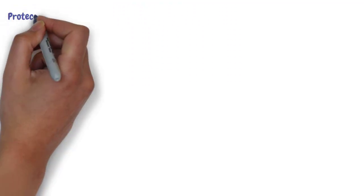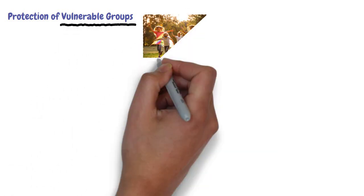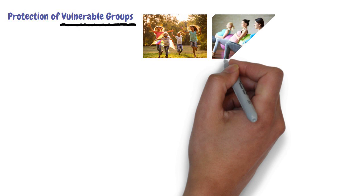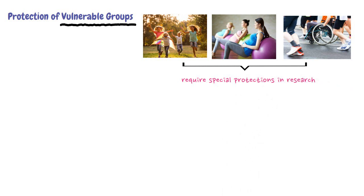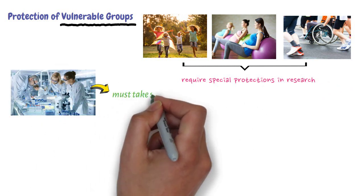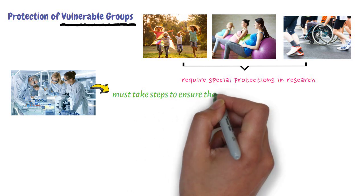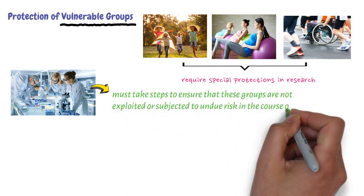Fourth, protection of vulnerable groups. Vulnerable groups, such as children, pregnant women, and individuals with mental or physical disabilities, require special protections in research. Researchers must take steps to ensure that these groups are not exploited or subjected to undue risk in the course of their research.